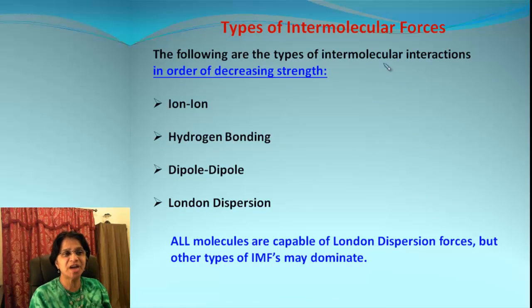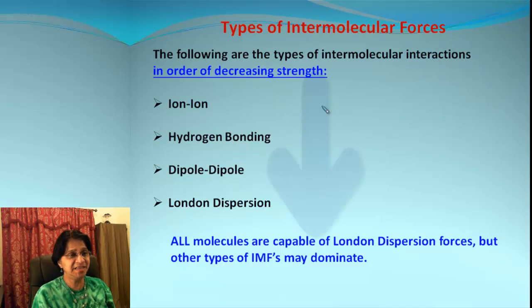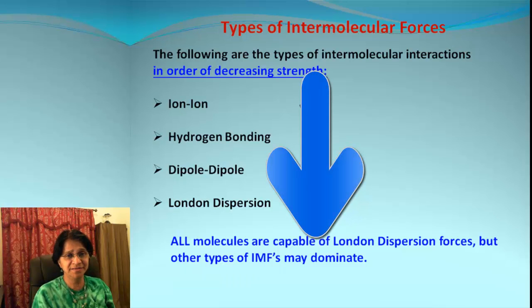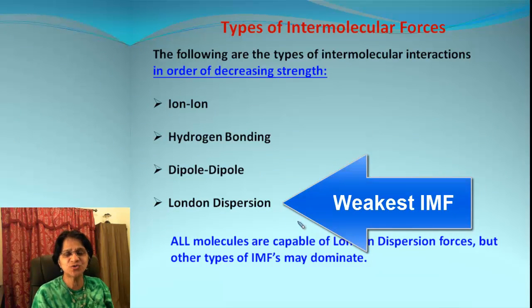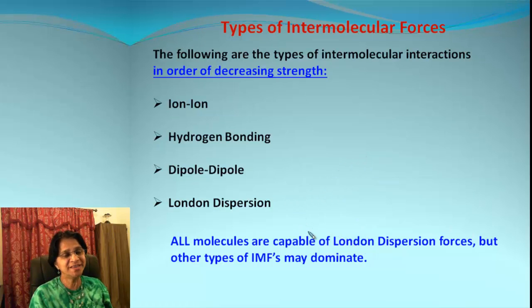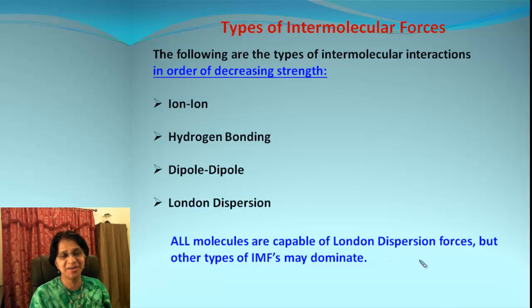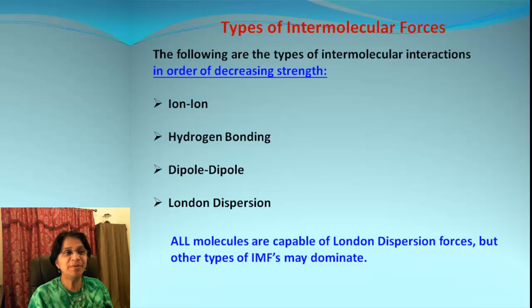Now let's learn about different types of intermolecular forces. These forces are listed in order of decreasing strength. We have: first, ion-ion interaction, which is the strongest force; second is hydrogen bonding; third is dipole-dipole; and the last one, or the least strong, is London dispersion force. One thing to keep in mind is all molecules are capable of having London dispersion forces. What we are going to talk about is the other type of IMF which may dominate that molecule.